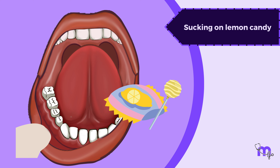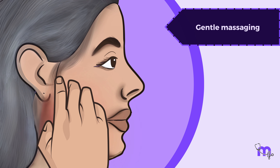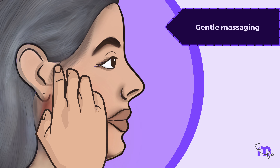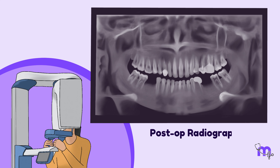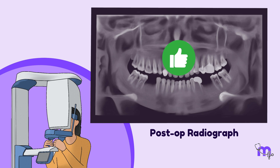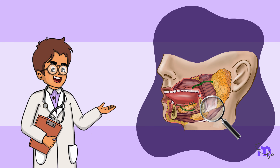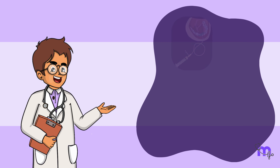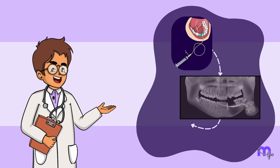Ethidol is an oil-based contrast media. In the third phase — the emptying or evacuation phase — the cannula is gently removed from the ductal orifice. The patient was asked to suck on lemon candy to stimulate salivary flow, which causes excretion of the contrast agent. In some cases, gently massaging the gland can also aid in expelling the contrast agent. A post-operative radiograph was taken to confirm that the contrast agent had been completely cleared from the duct.